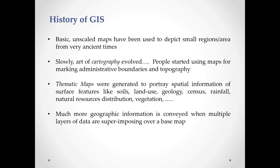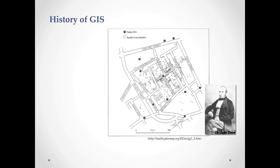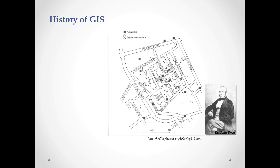Much more geographic information is conveyed when multiple layers of data are superimposed over a base map. For example, Dr. John Snow mapped cholera deaths and pump locations over the map of London to find the cause of a disease outbreak. This map showed people the pump locations and the number of cholera deaths to identify the cause of the outbreak.